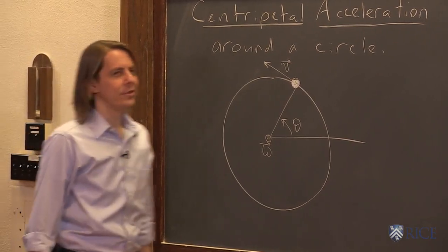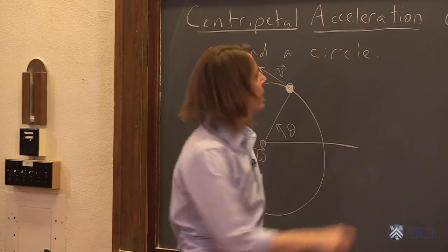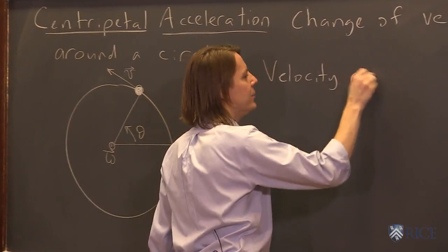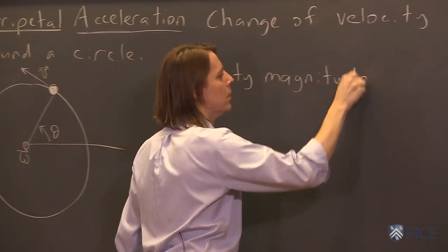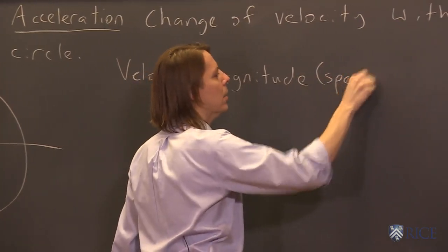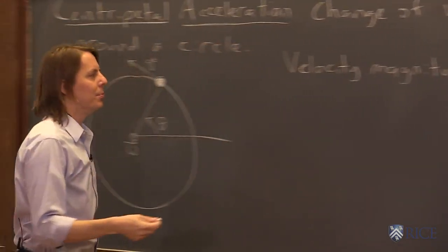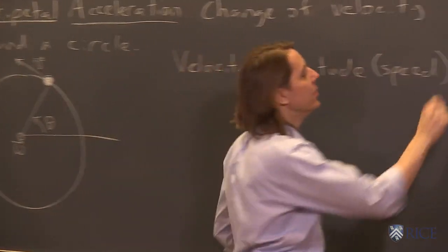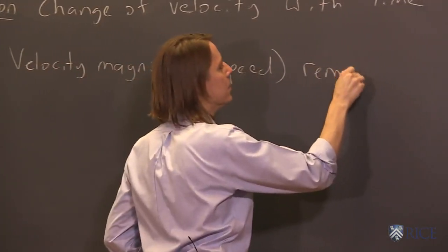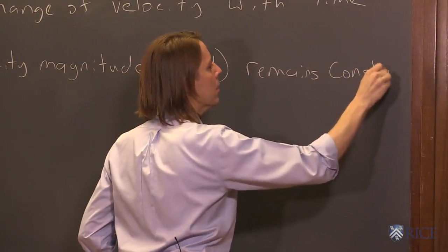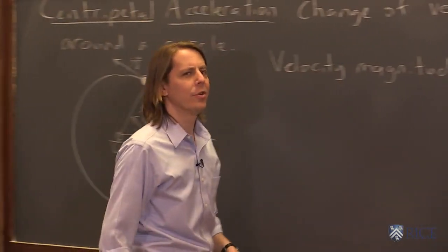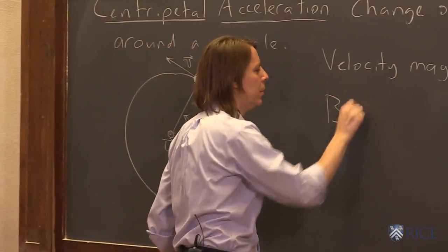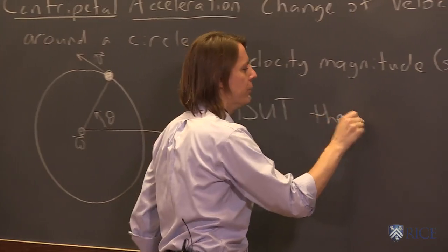So we could say centripetal acceleration is the change in the velocity. But the trick is that the velocity magnitude doesn't change. That's what uniform circular motion is, it goes around with the same speed. So the velocity magnitude, or the speed, remains constant. So how can there be acceleration if the speed remains constant? But the direction changes.